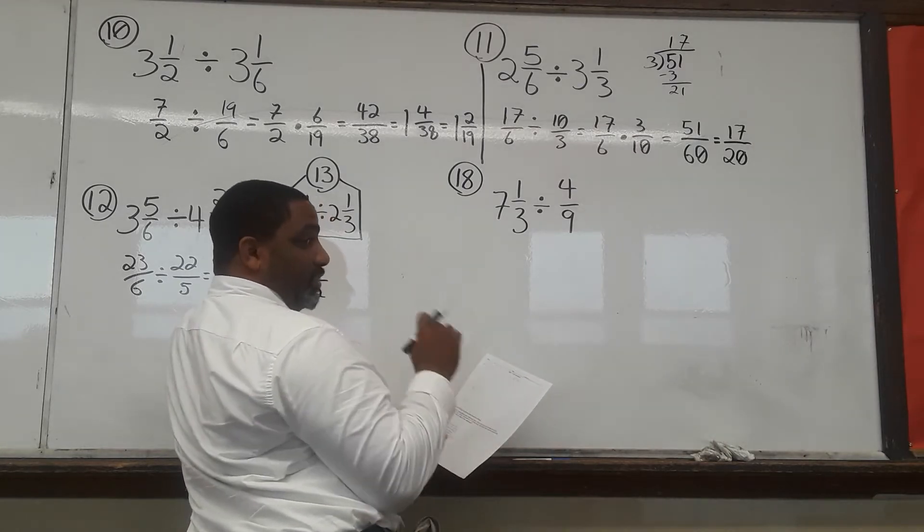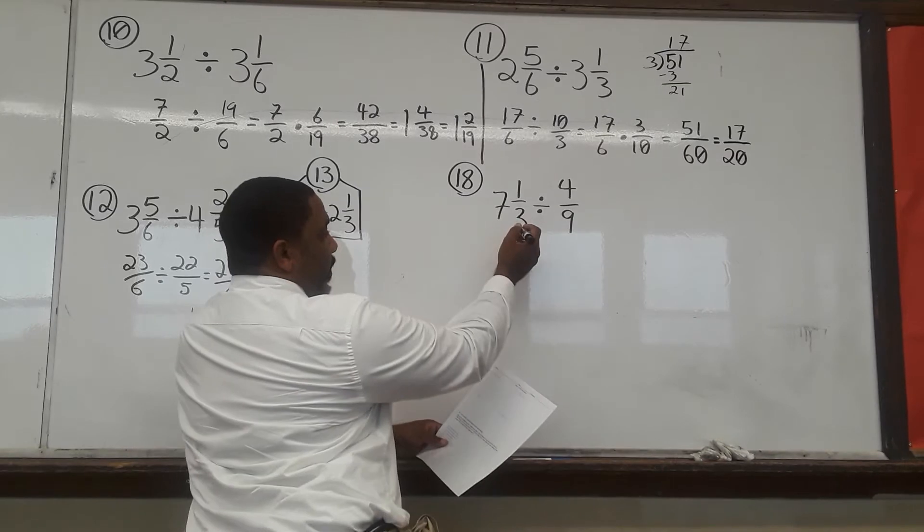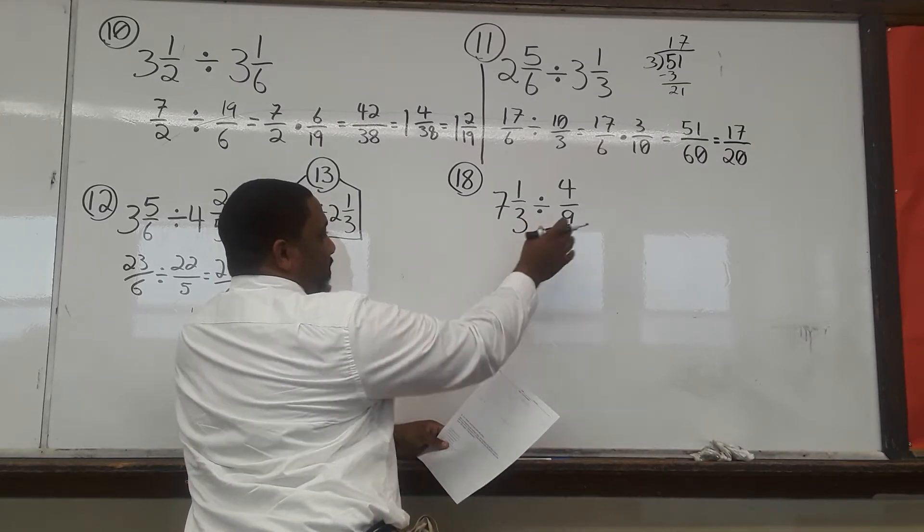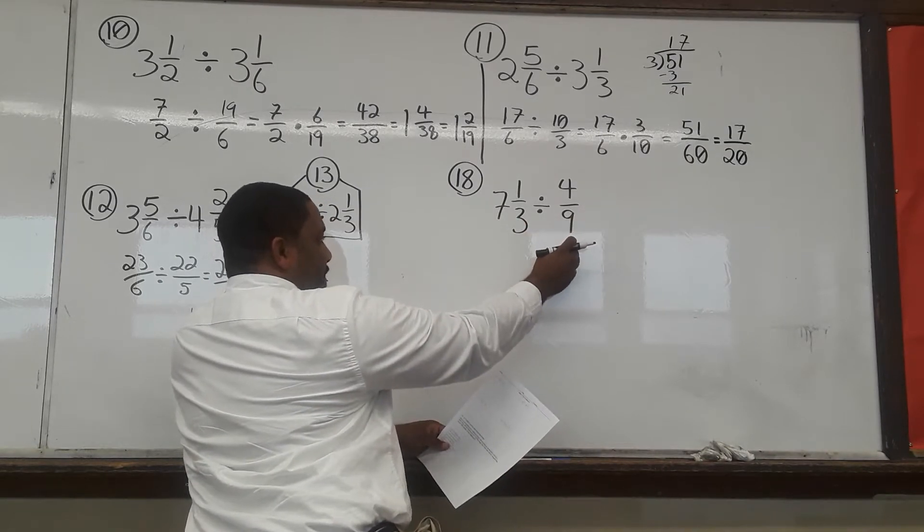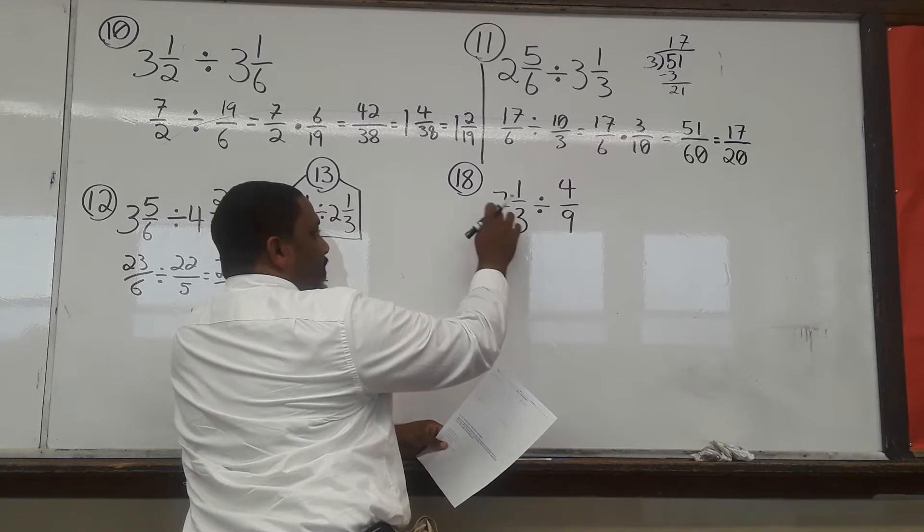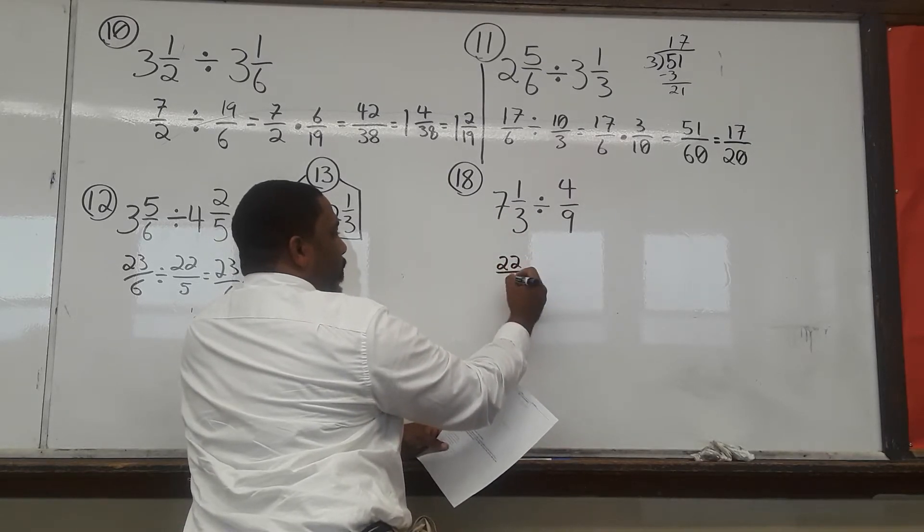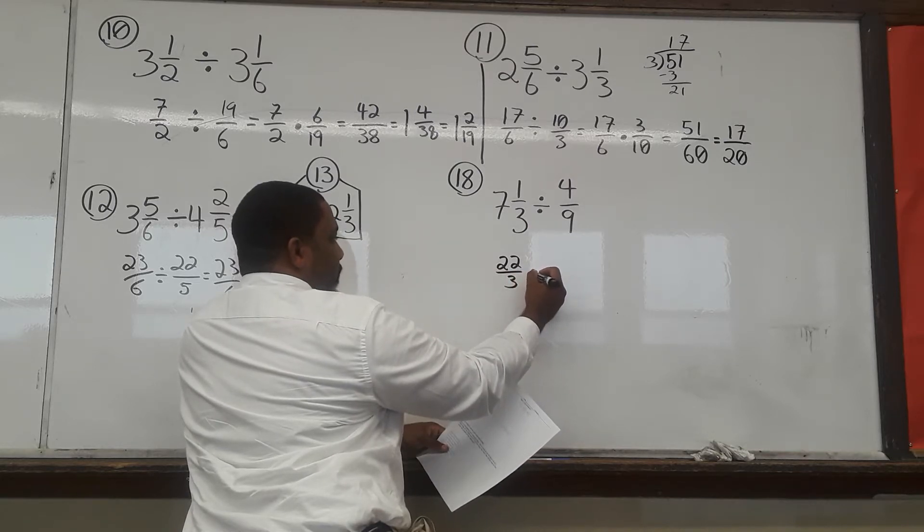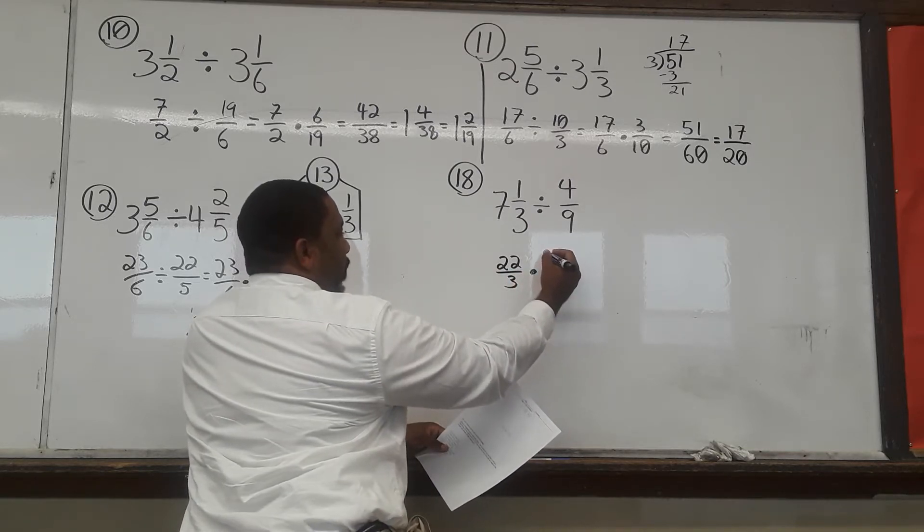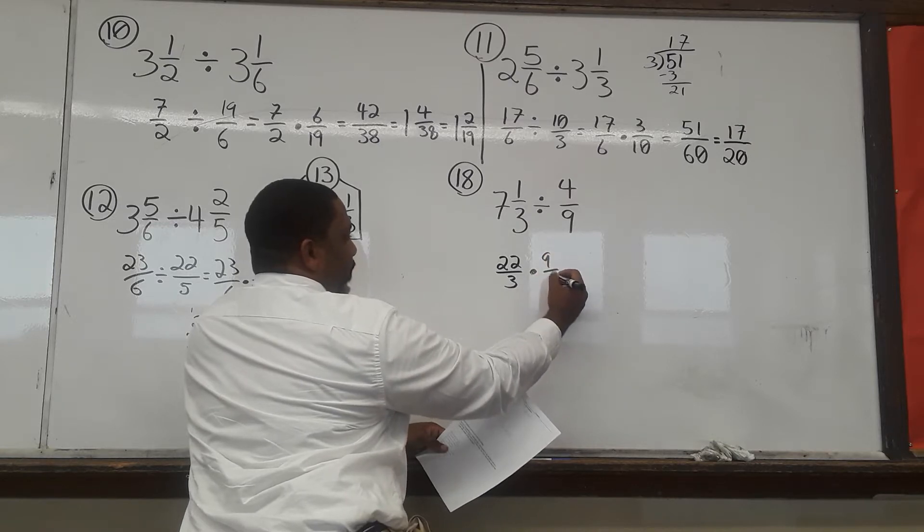And the question is asking us how many tiles we need to cover the length of the bathroom. And that question is what tells us what we're dividing. So, we need to convert this to an improper fraction. And the other number is already not a mixed number. 3 times 7 is 21. Plus 1 gives us 22 over 3 divided by 4 over 9 or times 9 over 4.